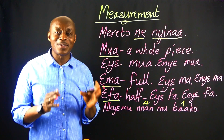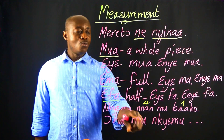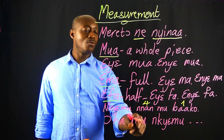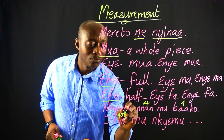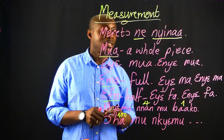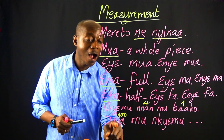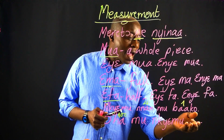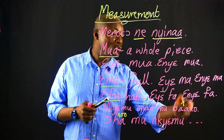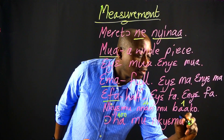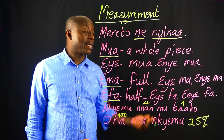So in Twi we say OHA MU NCHEMU. OHA is hundred, and NCHEMU is divisions. So OHA MU NCHEMU means percentage — divisions of a hundred. If it is 25%, then you say OHA MU NCHEMU 25. If it is 30%, you say OHA MU NCHEMU 30.